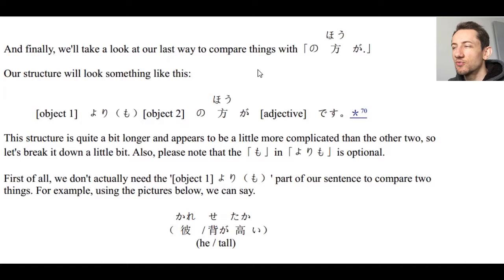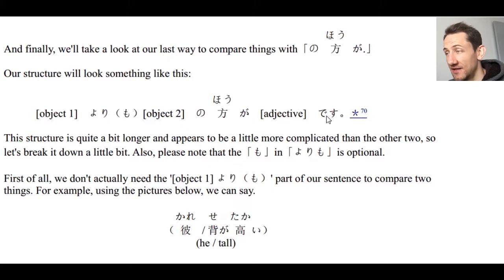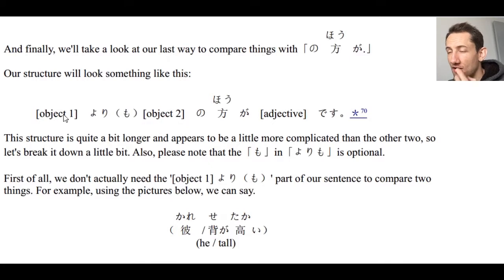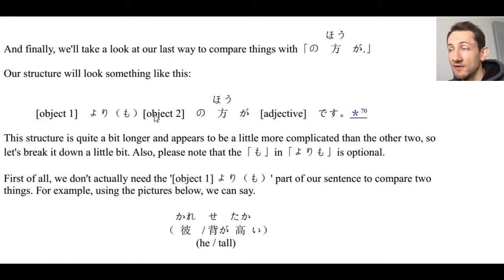The structure we're going to practice using today looks something like this: Object one, yori mo, object two no hoga, adjective desu. The structure looks a little longer and more complicated than what we learned with yori and hodo, but it's really straightforward and easy. I should point out that the mo in yori mo is optional — we can say object one yori, object two no hoga, or object one yori mo, object two no hoga. Either one is fine.